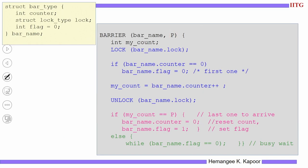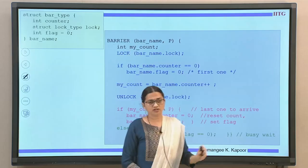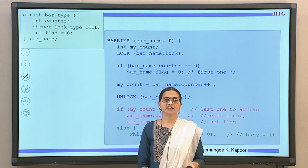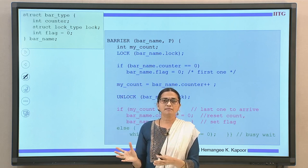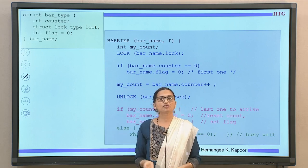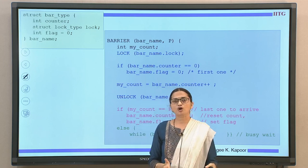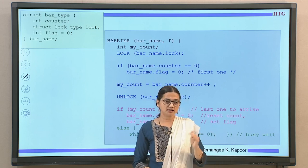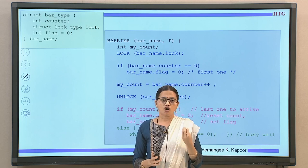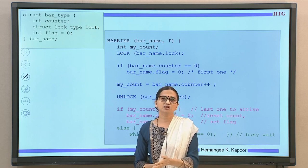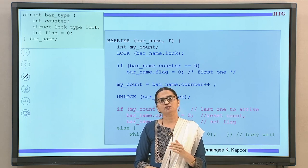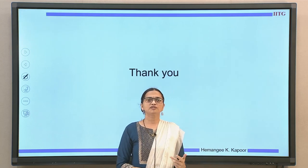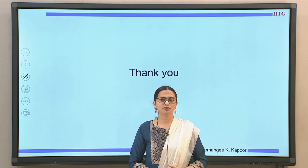Another cleaner slide shows the same code. This is how barrier synchronization can be established. These are one example, but there are multiple other types of implementations and more advanced lock algorithms. This module has given you a flavor of how these synchronization constructs can be implemented in software as well as hardware. With this we finish the module on synchronization. Thank you.